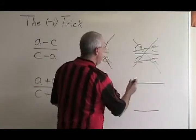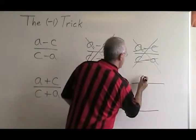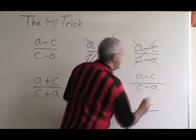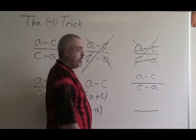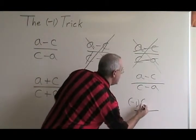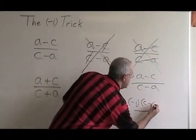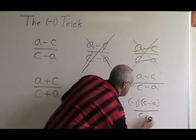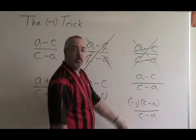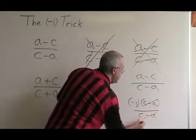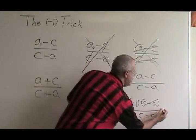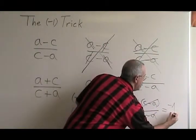If we have a minus c over c minus a and we do the negative one trick, we end up with negative one times c minus a over c minus a. Now the binomials are the same and we can cancel them. Our answer to this question is negative one.